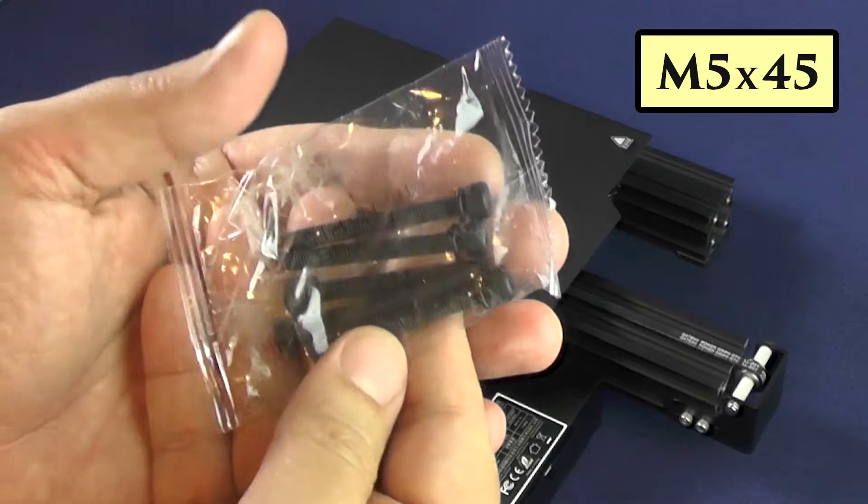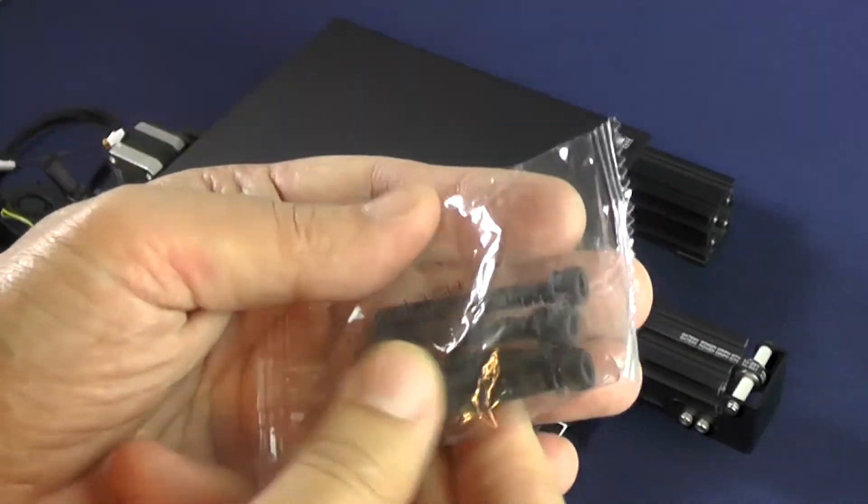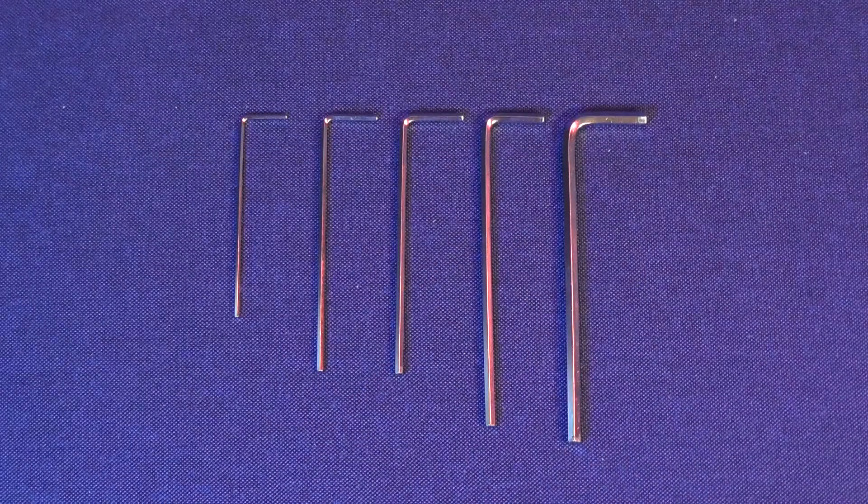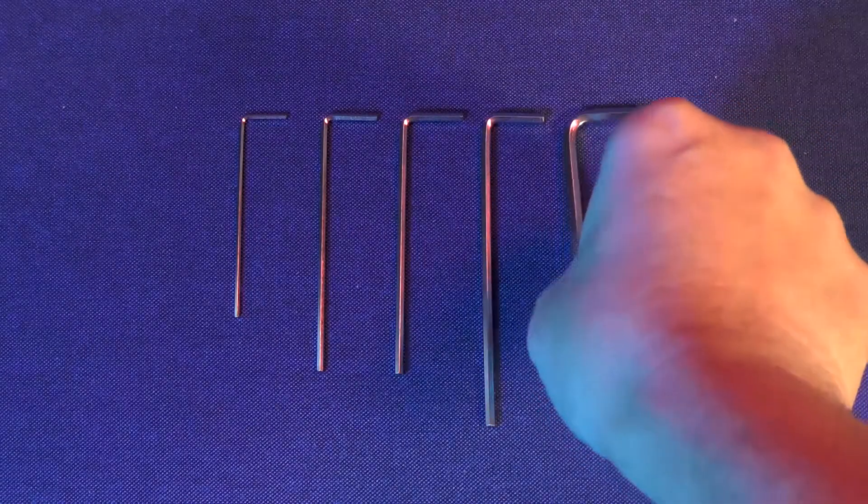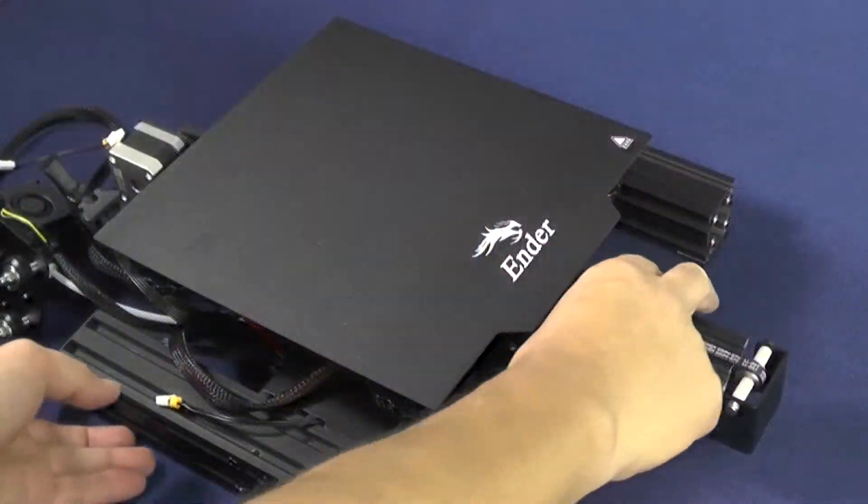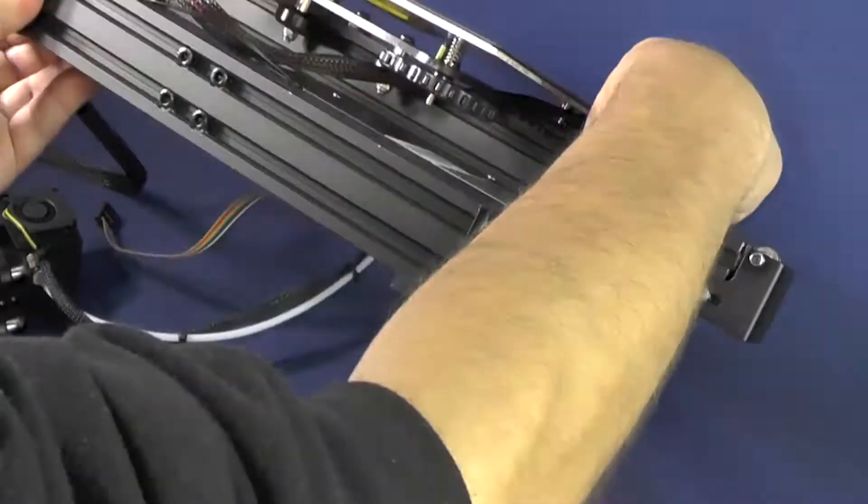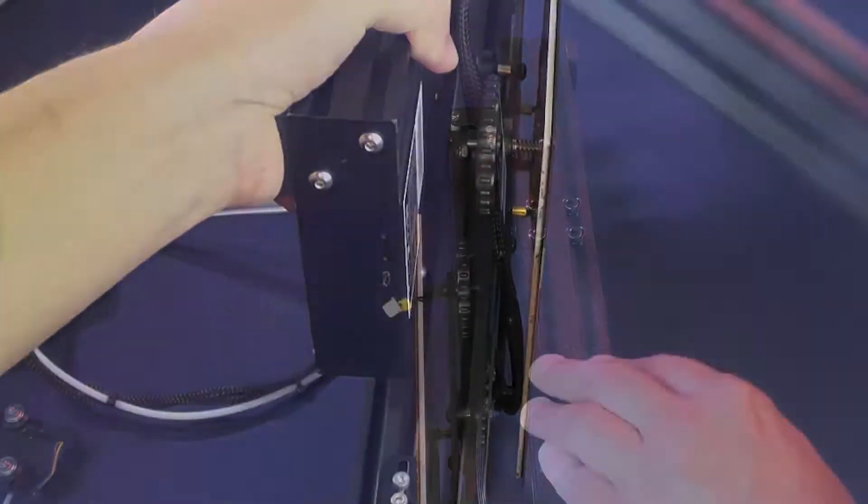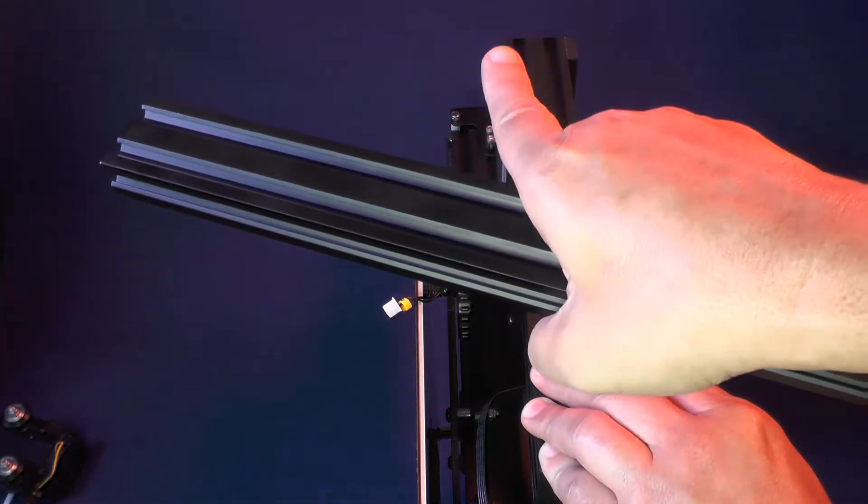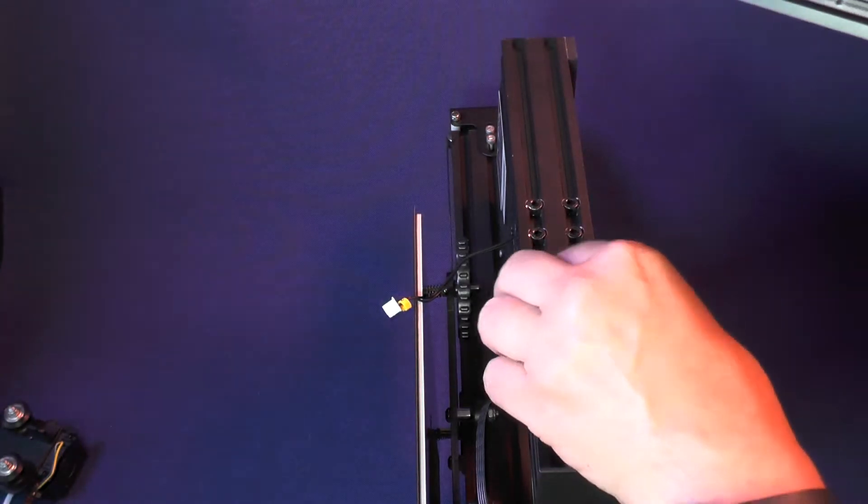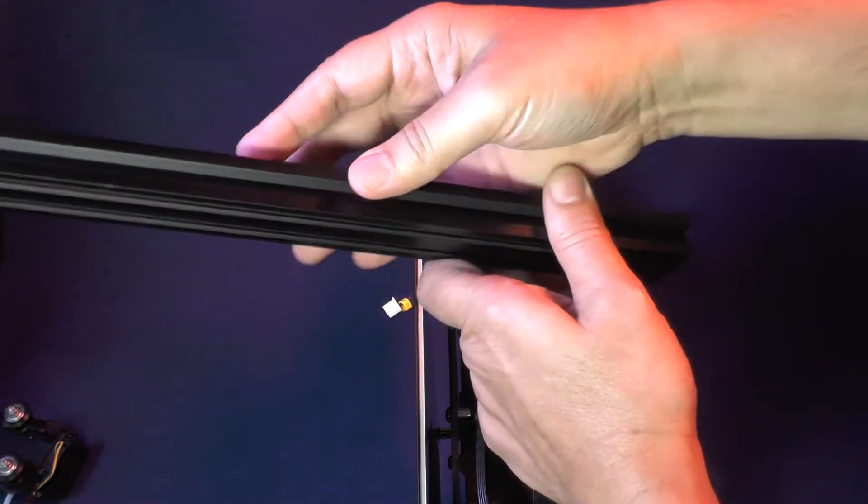We're going to need the M5x45 screws, and for this task we'll need to pick up the largest hex wrench from the ones that came with the printer. Now you set the base of the printer sideways with the front facing away from you, and you pick up the 2040 aluminum extrusion that only has holes on one end.